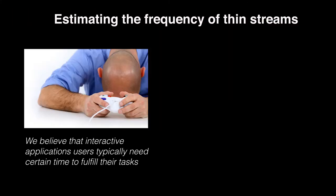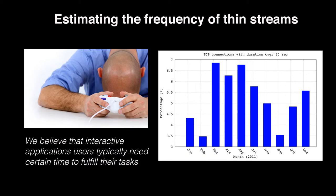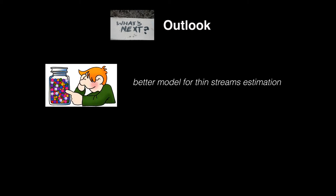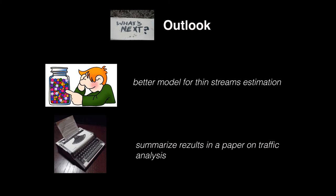Since interactive application flows are typically long-lasting, we only considered flows that last over 30 seconds. Based on properties observed in traffic generated by some TCP games, such as payload size and inter-arrival times, we tried to estimate the proportion of thin streams. The main tasks outstanding for the current project include improving the thin stream estimation model and presenting the results in a paper.